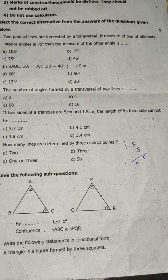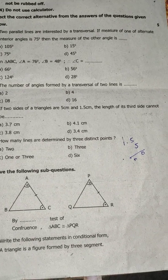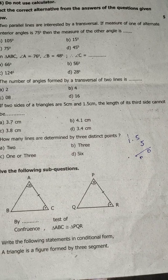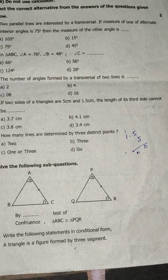In angle ABC, angle A is equal to 76 degrees, angle B is equal to 48 degrees. Therefore, angle C is equal to.